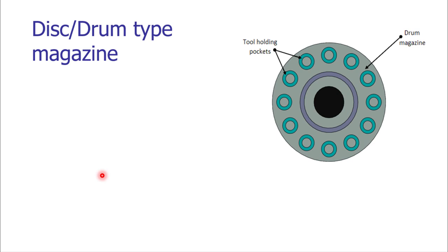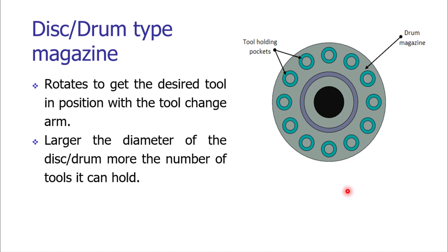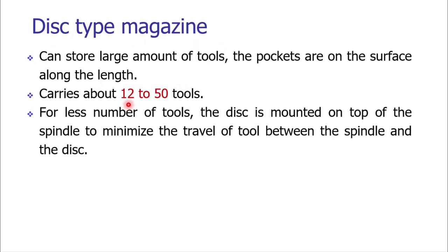The first type is the disc or drum type magazine. The arrangement is simple: a disc or drum with tool holding pockets on its surface where tools are mounted. The drum or disc is mounted on an indexing mechanism. As per the indexing programmed in the CNC machine tool, the required tool arrives at the tool pickup station. The disc type magazine can store about 12 to 50 tools.